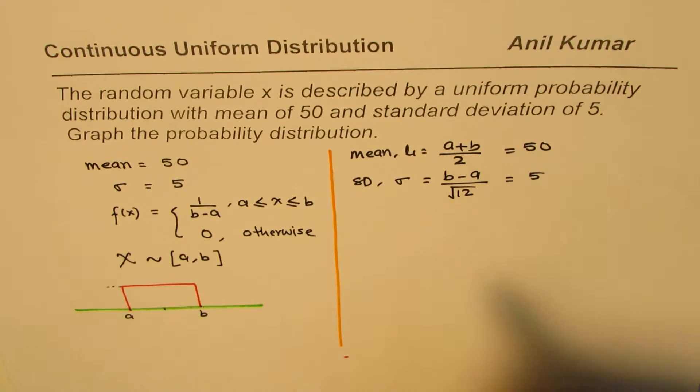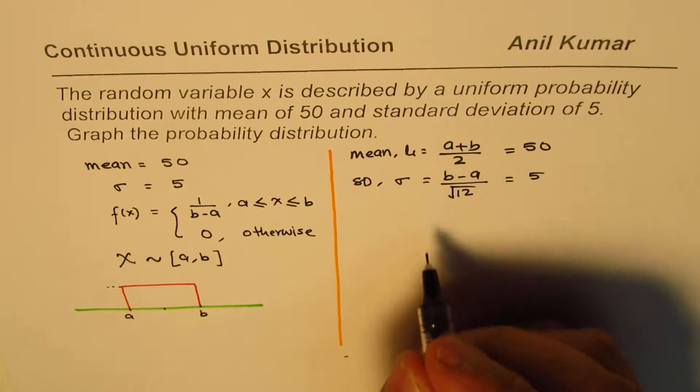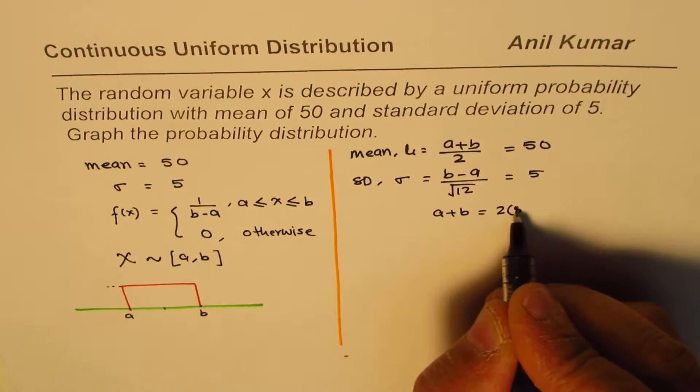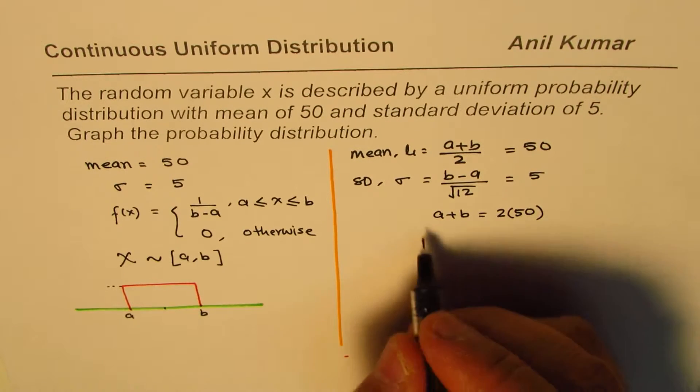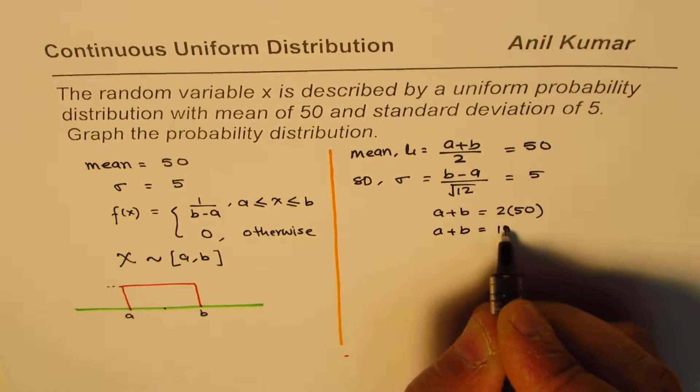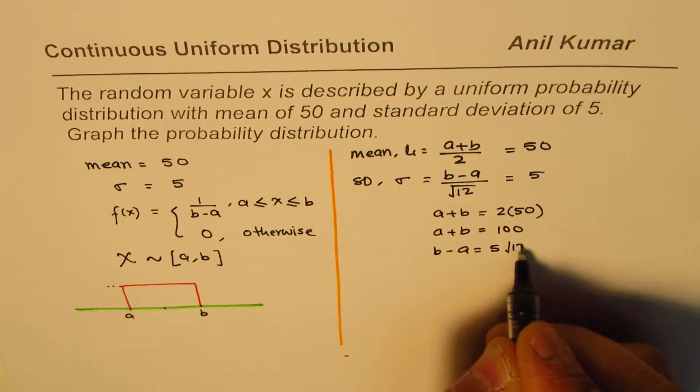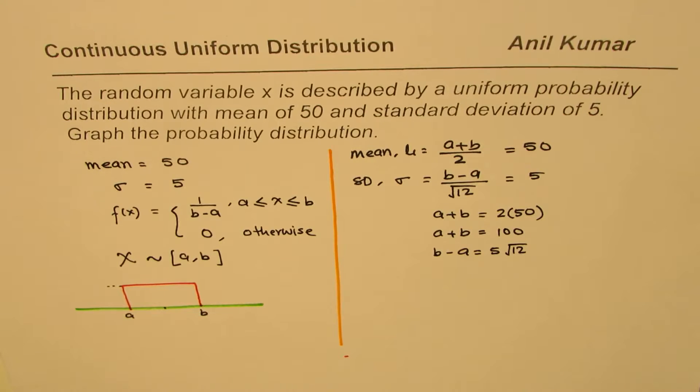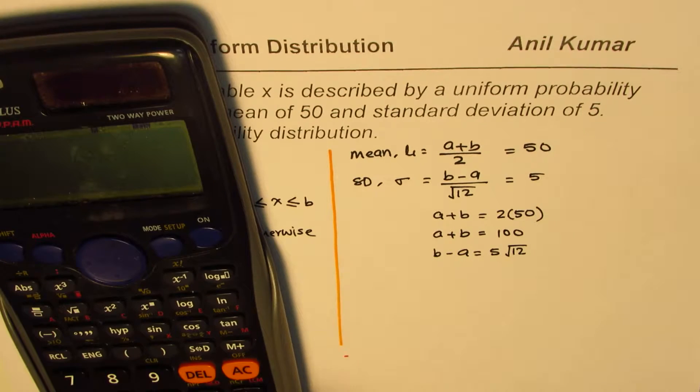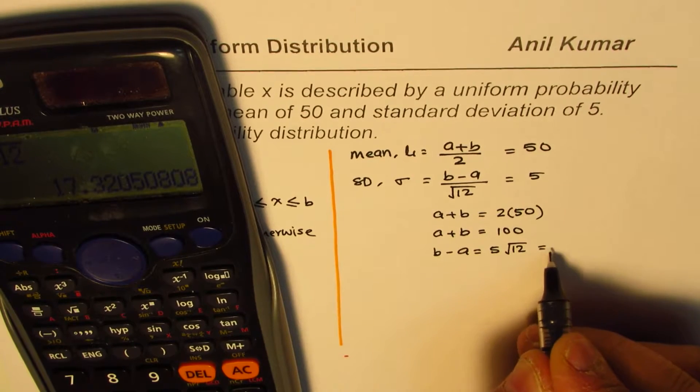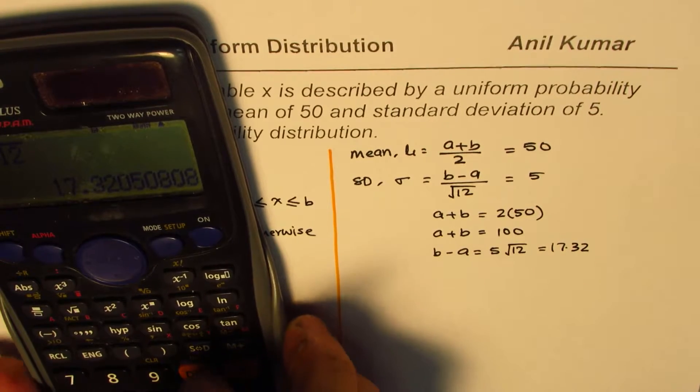So if you rearrange, then what do you get? From the first equation, you get a plus b equals 2 times 50, which is 100. So we get a plus b equals 100. From the second equation, you get b minus a equals 5 times square root 12. So we'll write to two decimal places the value of square root 12, which is 4 times square root 3. So we'll say 5 times square root 12 equals in decimals 17.32.